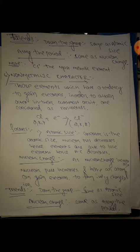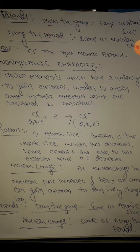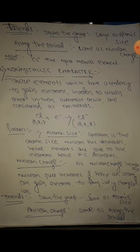Non-metallic character is also part of periodic properties. Down the group, non-metallic character decreases and along the period it increases. When atomic size increases going from top to bottom, the number of shells increases and nuclear pull decreases, so atoms tend to be metallic rather than non-metallic — that's why non-metallic character decreases down the group. Across the period, nuclear charge increases, so atoms can more readily gain electrons to form negatively charged ions, increasing non-metallic character.